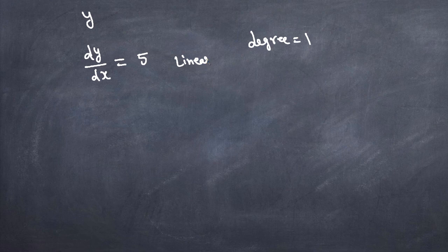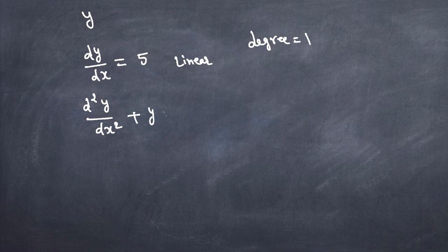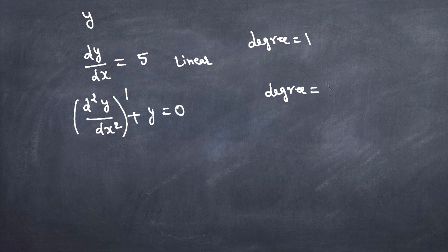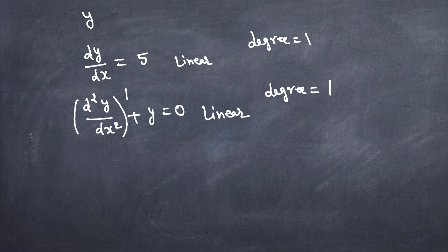Another example: d²y/dx² plus y equals 0. The power of the highest derivative here is 1, and the function or its derivatives are not multiplied anywhere, so this is again a linear differential equation.